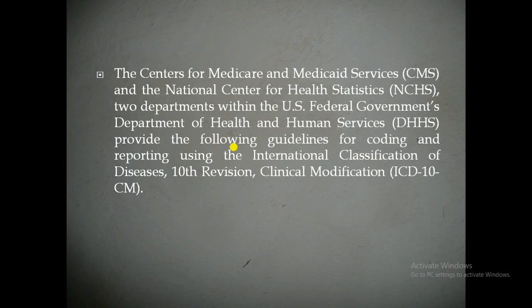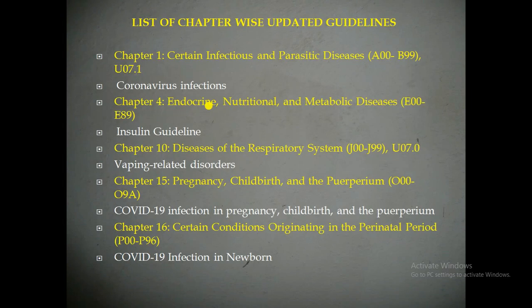Using the classification of diseases, guidelines are provided. As we know there are 22 chapters. In chapter 1, that is certain infectious and parasitic diseases, coronavirus infections are updated.